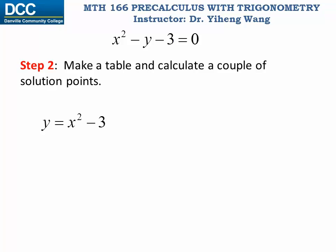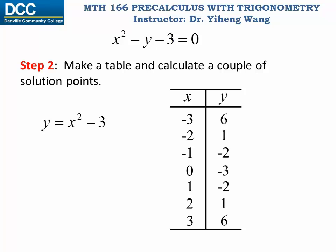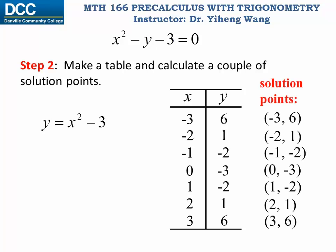Step 2: Make a table, pick some values for x, make sure you cover a reasonable range from negatives to positives, and then calculate the corresponding y values. As we discussed, these are the x-y coordinates of the solution points to the equation.